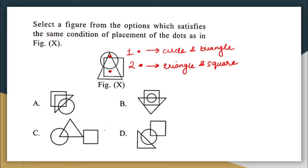In the option figures, I have to check whether I can place a dot inside the circle and triangle alone but not inside the square, and another dot inside the triangle and square alone but not the circle. Looking at option A: I can shade a region within the circle and triangle alone for the first dot. I can place the first dot there — it will not be part of the square.